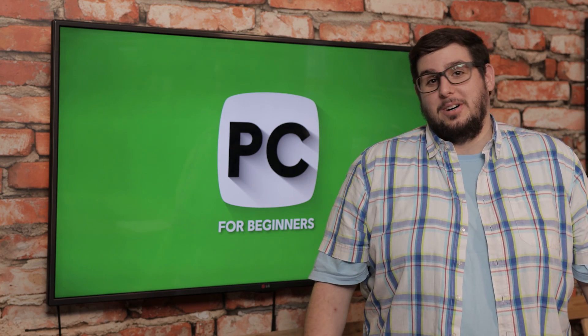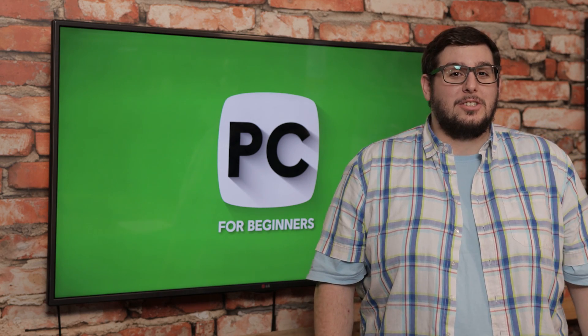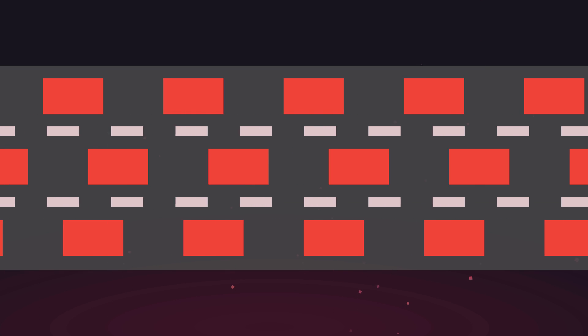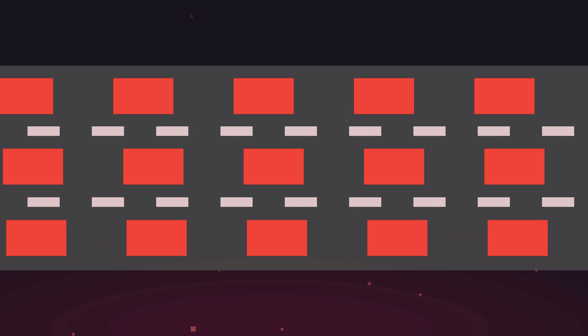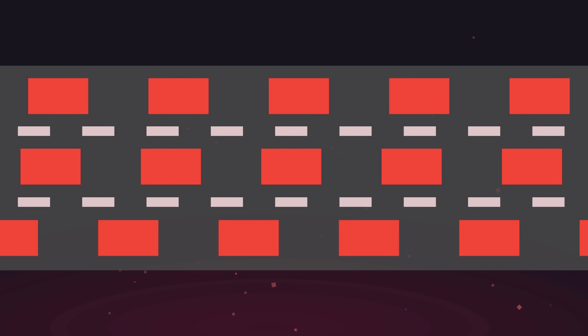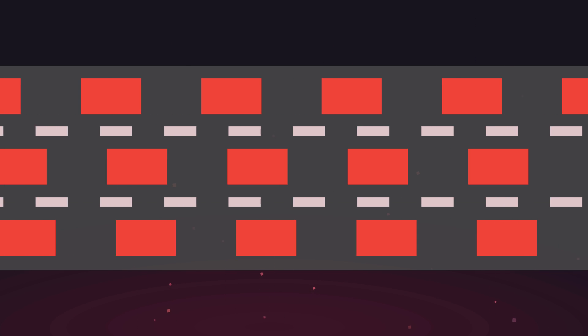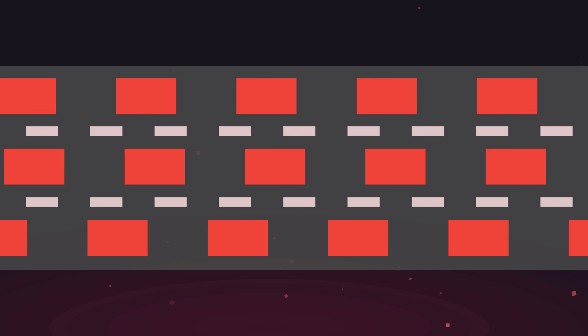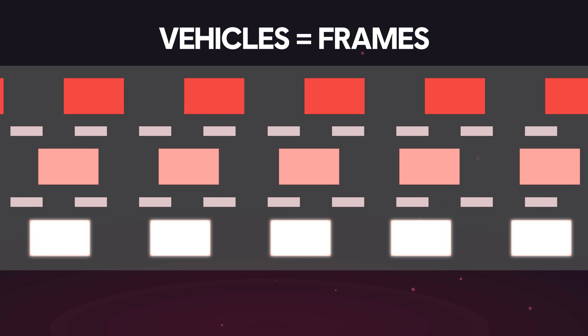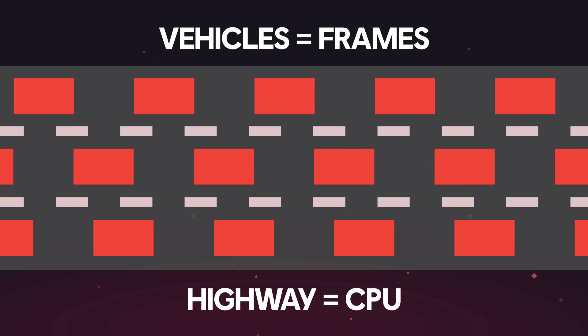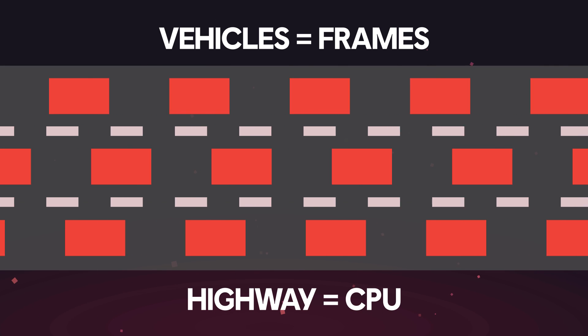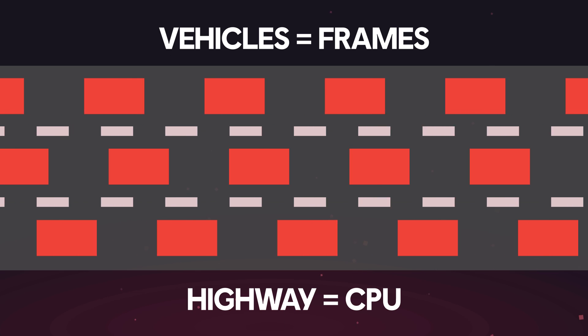The best way to understand a bottleneck is, well, a nice visualization, so let's imagine a highway with traffic and those lovely traffic jams. We all know how a highway or a freeway is supposed to work — everyone moving at or near the same speed in order to get where they're going. When everything works as intended, there are no traffic jams, but we all know that that's not really the reality. We can also think of a balanced PC in the same way. The vehicles driving on the highway are the frames that your GPU is rendering. The highway itself is the CPU, making sure everything is moving forward. In the best case scenario, these are perfectly balanced, as all things should be.